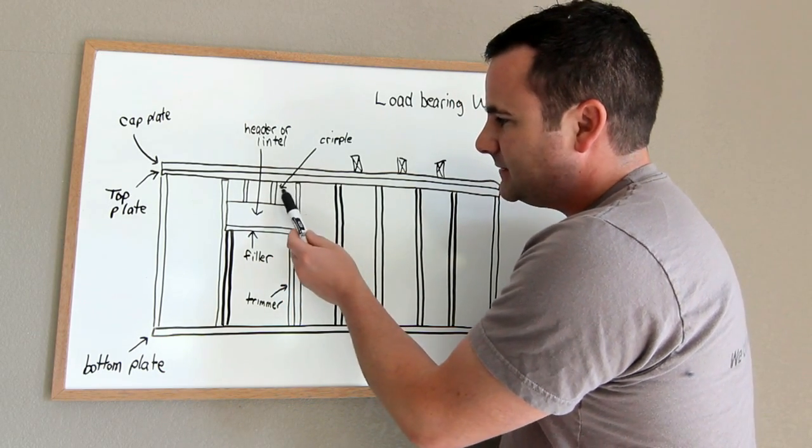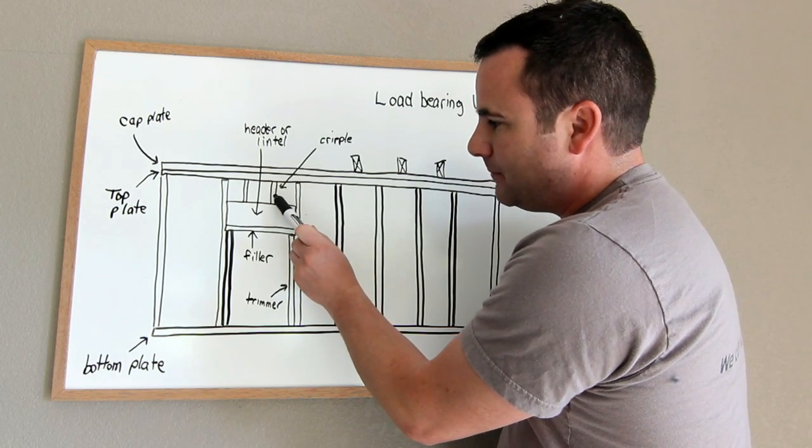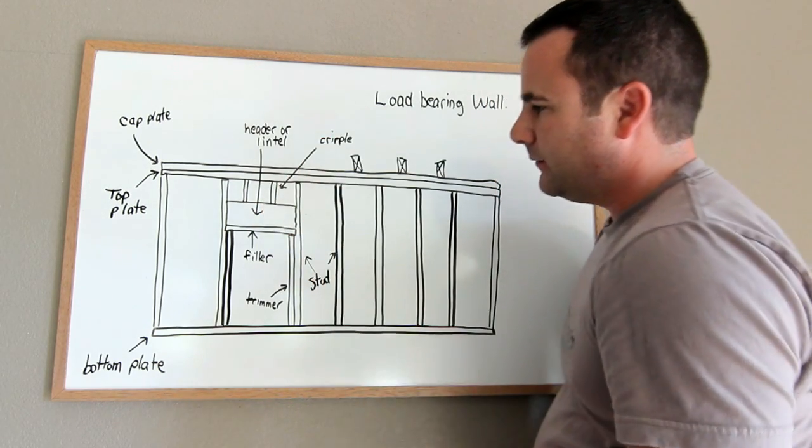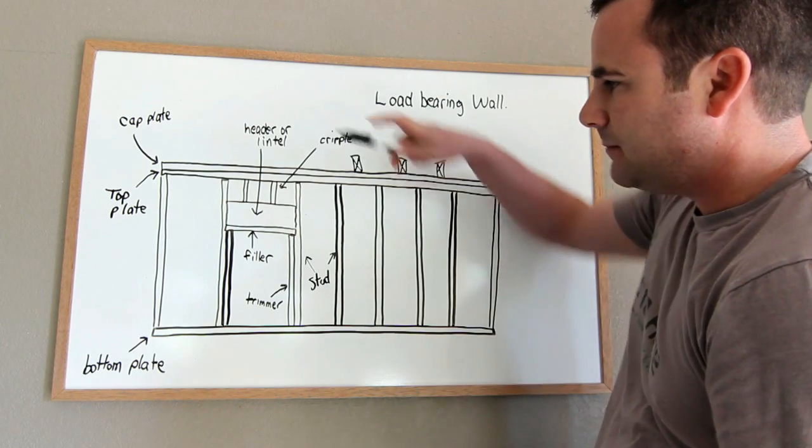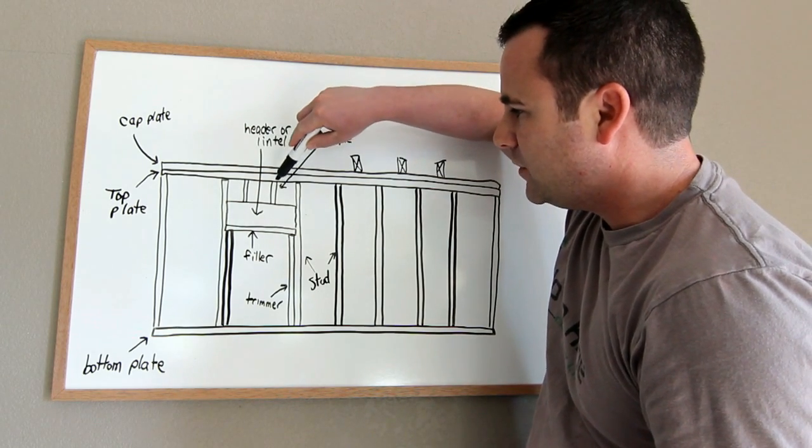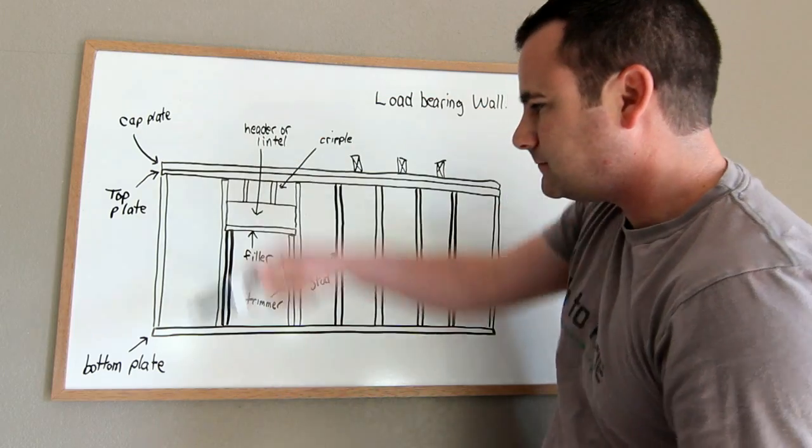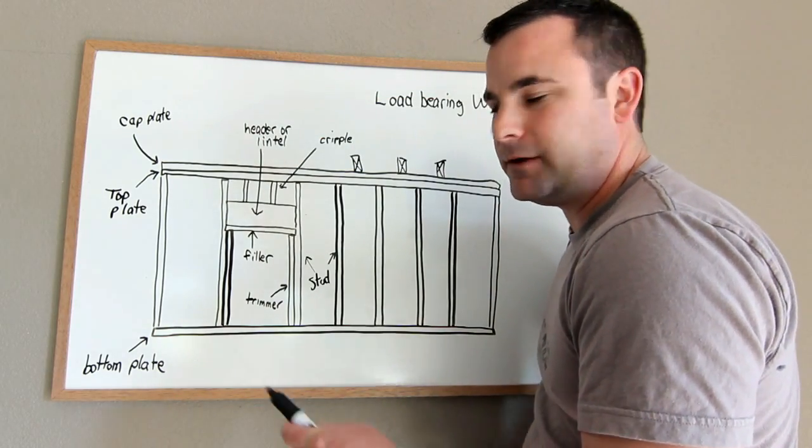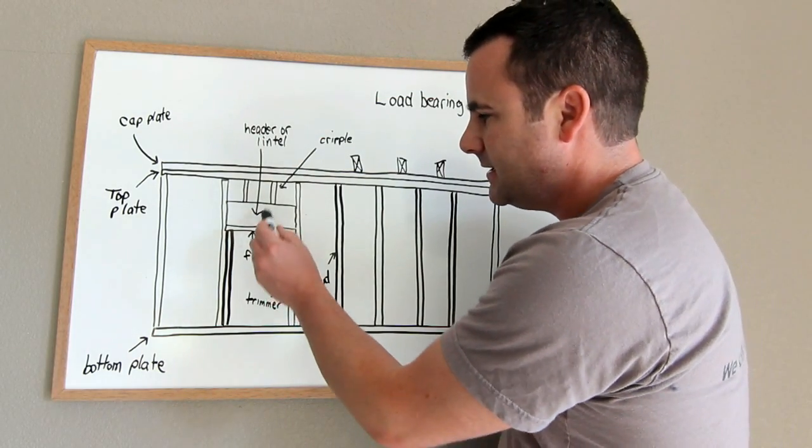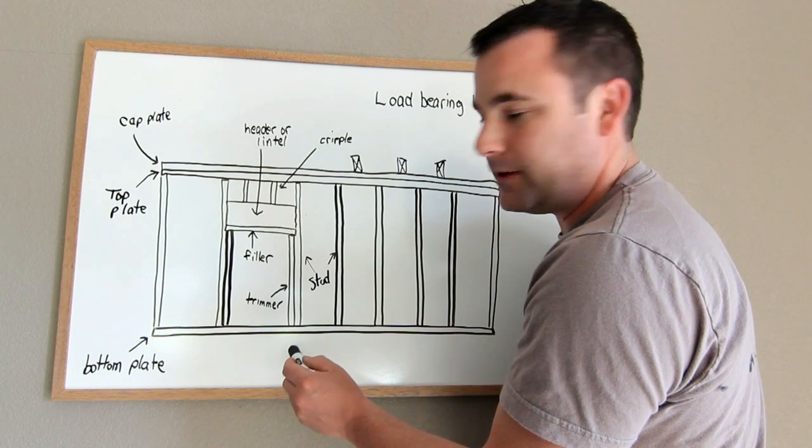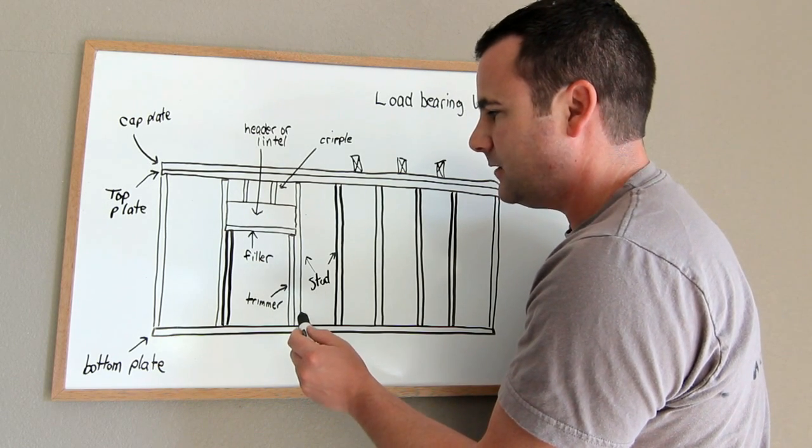So basically, as you move your way up, the cripples are there. When weight comes down on top of these, it pushes down and puts pressure on the header. Now the headers are designed for different length openings. It transfers the weight over to the trimmers and down to the floor or the ground. So that's how that works.